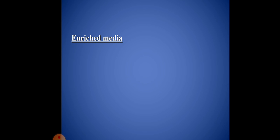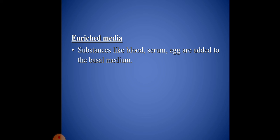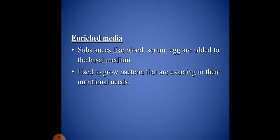Enriched media are very useful for the growth and isolation of fastidious microorganisms. Fastidious microorganisms require some special or additional nutritional supplements for growth. For example, blood, serum, or egg are added to the basal medium. This is used to grow bacteria that are exacting in their nutritional needs. Examples: blood agar and chocolate agar.